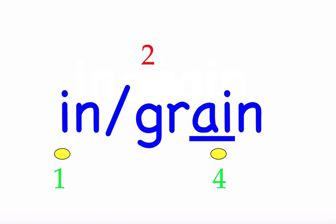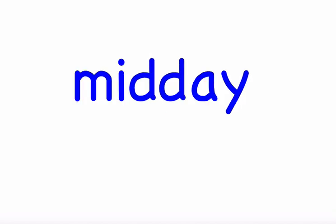The next word is 'midday.' The sun was directly over us at midday. First syllable 'mid' — three sounds, M-I-D. Second syllable 'day' — two sounds, D-A-Y. Mark the word. Midday.